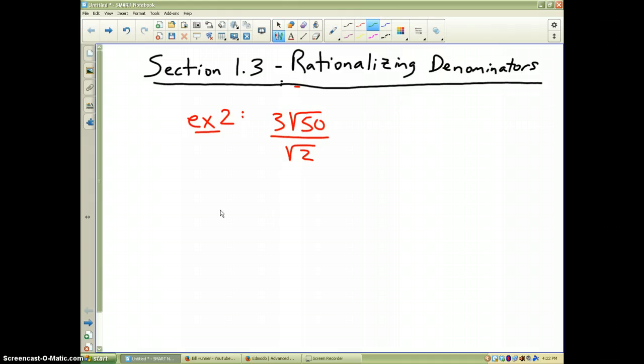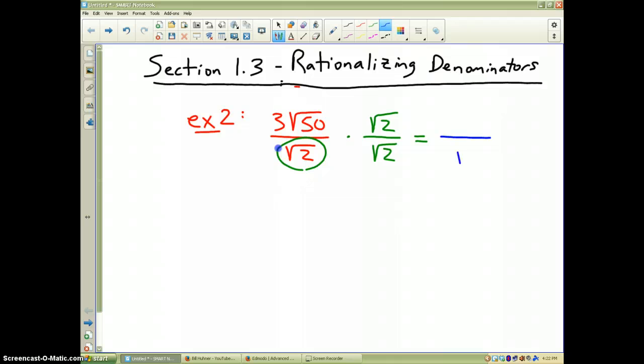To solve this problem and to rationalize the denominator, which means to get rid of this square root, I'm going to times the top and bottom by the square root of 2. So very simply, in the denominator, square root of 2 times square root of 2 is square root of 4. In the numerator, square root of 50 times the square root of 2 is the square root of 100. And we'll just leave the 3 on the outside.